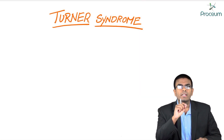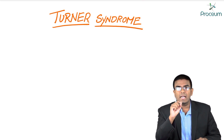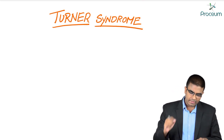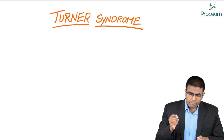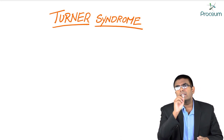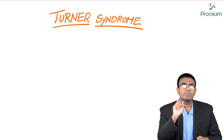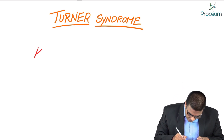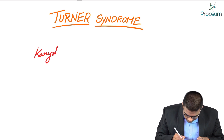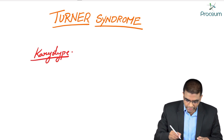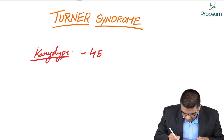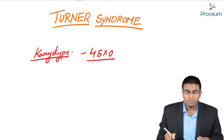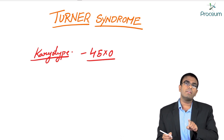Hello students, today let's discuss a very important topic — an examiner's favorite: Turner's syndrome. This is a very important MCQ topic which keeps repeating. The karyotype seen in a Turner's patient is 45,X0. The most common karyotype is 45,X0.